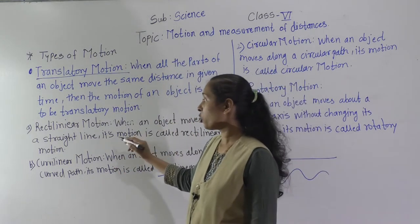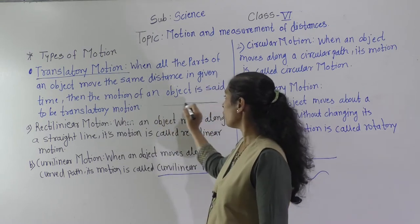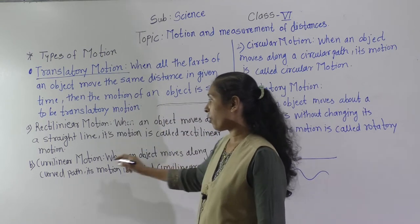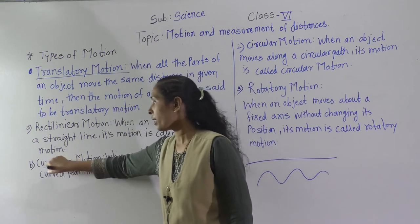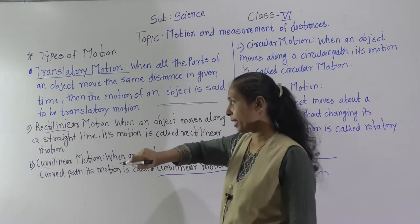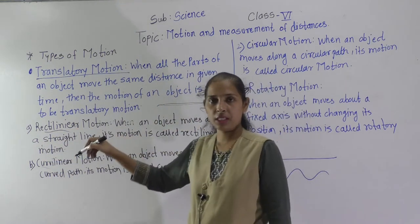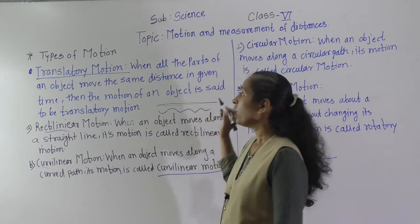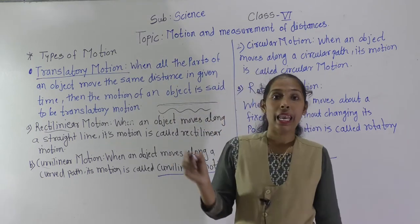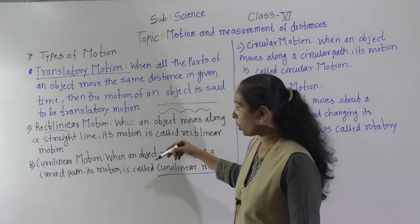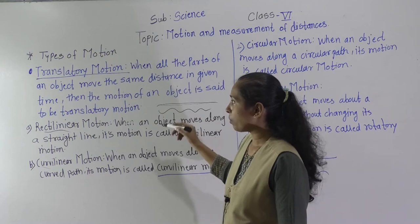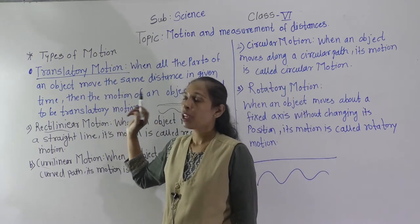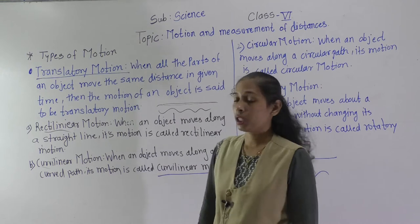To summarize: in rectilineal motion, the object moves along a straight line. In curvilineal motion, the object moves along a curved line. Both rectilineal and curvilineal motion are types of translatory motion. This completes the first type of motion.